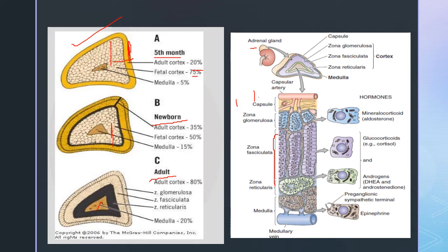The fetal adrenal gland begins to develop at 3 to 4 weeks, with the cortex containing a fetal zone and adult zone forming around the 5th to 8th week of gestation. ACTH regulation is established by the 8th to 10th weeks of gestation — meaning within the first trimester, there is a well-developed fetal adrenal gland.